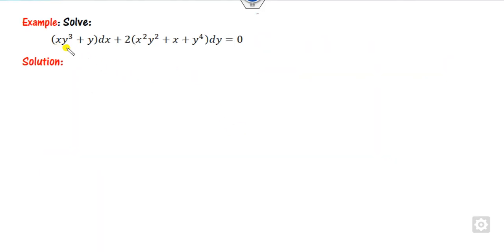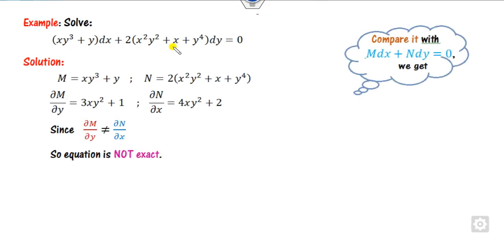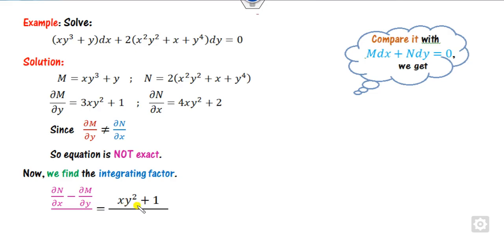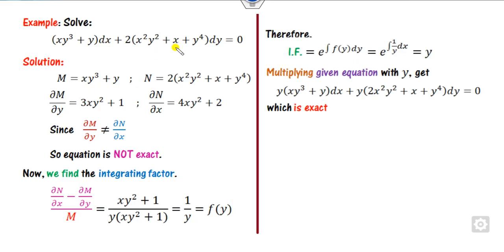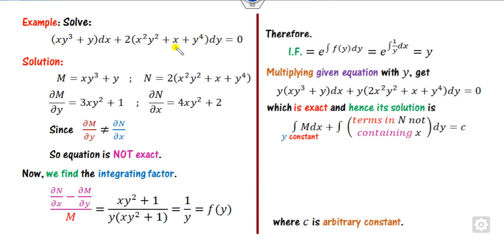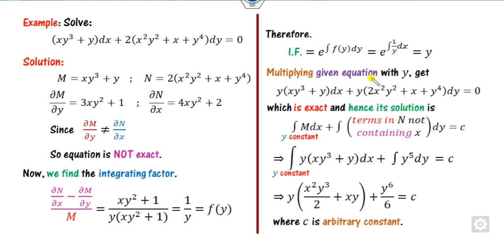For the third example, this is my M and this is my N — it is not exact. Subtract them, and writing it in terms of M means dividing by M. Taking y as a common factor, we get xy squared plus 1, so the answer is 1 upon y, which is a function of y only. Therefore, the integrating factor is y. Multiply the differential equation by y — the exact solution follows, and the only term independent of x is y to the 5th.